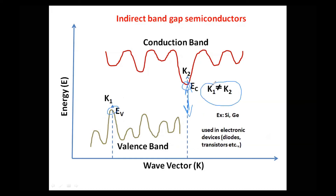Since K1 ≠ K2, the corresponding momenta are also not equal — P1 is not equal to P2. This means the electron at the bottom of the conduction band and the electron at the top of the valence band have different momentum values. That is very important. Therefore, if an electron wants to transition from the top of the valence band to the bottom of the conduction band, it cannot go there directly.